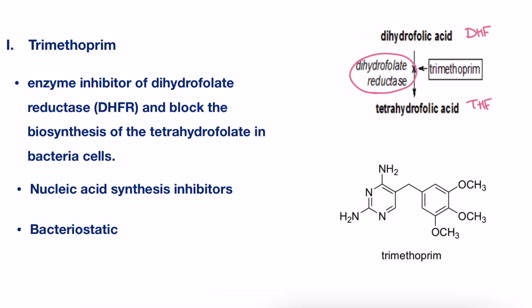And as we saw in the previous video on sulfonamides, tetrahydrofolate is an essential precursor in the pyrimidine and DNA synthesis pathway. Since trimethoprim inhibits tetrahydrofolate production, DNA synthesis will be blocked as well. So it is considered a nucleic acid synthesis inhibitor.